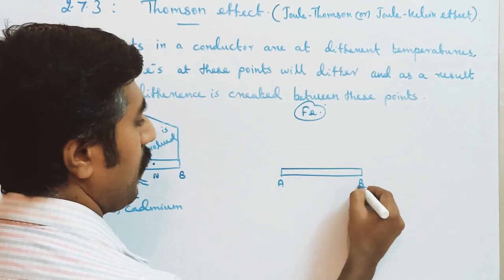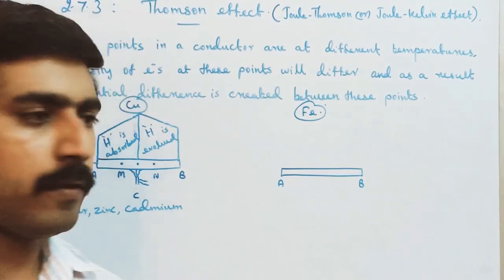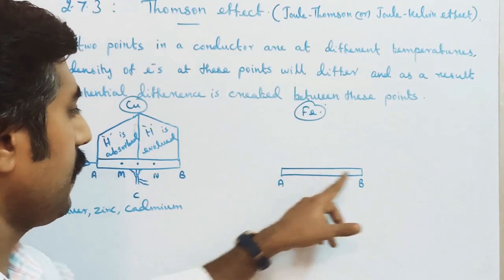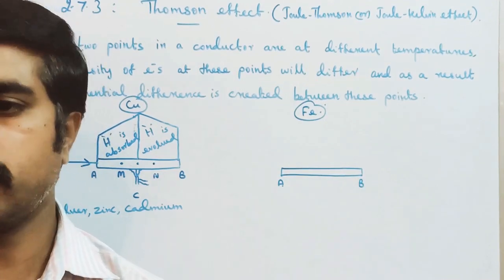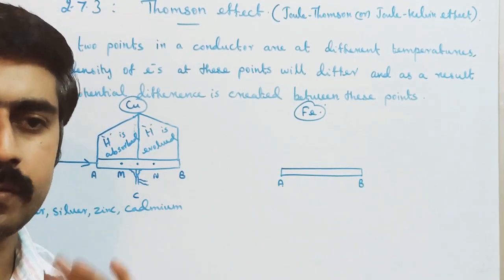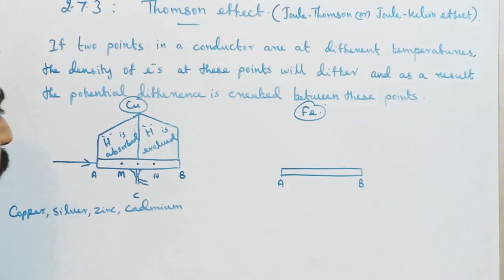In the iron bar — an unequally heated conductor — the temperature at the two points A and B differs, so electron density differs, and potential difference is produced.